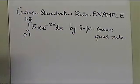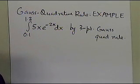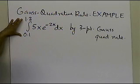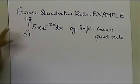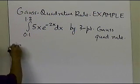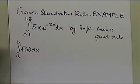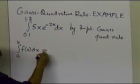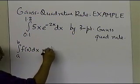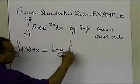How do we go about finding this integral using the three-point Gauss quadrature rule? The first thing you want to do is convert this integral into an integral going from minus 1 to plus 1. The value of the integral you get will be the same using this transformed integral.